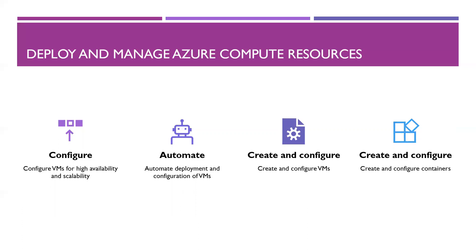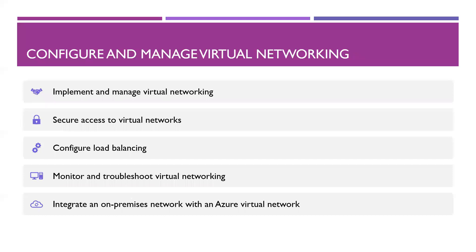Next: Configure and Manage Virtual Networking, which makes up 30 to 35 percent of the exam — the largest section. Implement and manage virtual networking: create and configure VNet peering, and learn about configuring private and public IP addresses, network routes, network interfaces, subnets, and virtual networks. There will be labs on creating VNet peering, creating a public IP address, and creating a load balancer, so prepare well on this VNet peering topic.